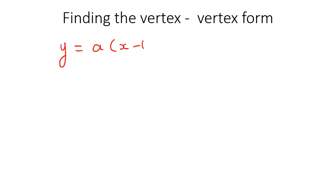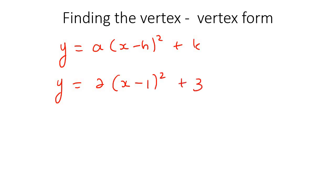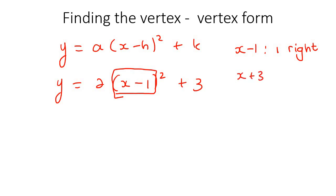Now I'm going to show you how to do it when they write it in vertex form — something like y equals 2(x minus 1) squared plus 3. The part inside the bracket tells you whether the graph is moving left or right. It's very weird, but it's the opposite of what you'd think. If it says x minus 1, that means 1 to the right. If it said x plus 5, that actually means 5 to the left. If it said x minus 6, that would mean 6 to the right. So: plus means left, minus means right — you must remember that.